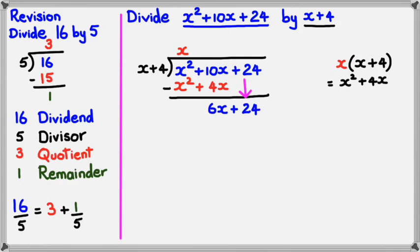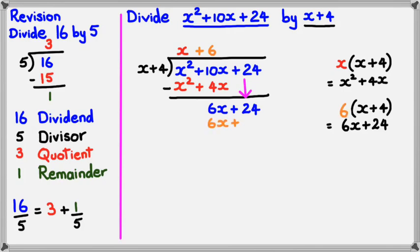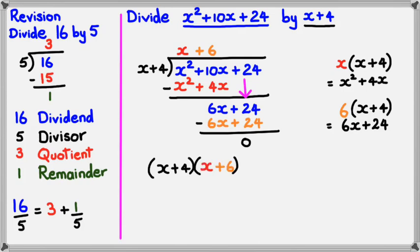Now, I've got x plus 4 as my divisor, and I've got 6x plus 24 at the bottom here. So, that means I've got to multiply x plus 4 by positive 6, because 6 multiplied by x plus 4 would give me 6x plus 24. The 6x plus 24 ends up there, and both of these things subtracted from each other gives you 0. So, the remainder is 0 and the quotient is x plus 6. We can verify this because if we take x plus 4 and multiply it by x plus 6, we're actually going to end up with the dividend, which is x squared plus 10x plus 24.